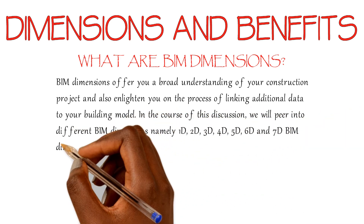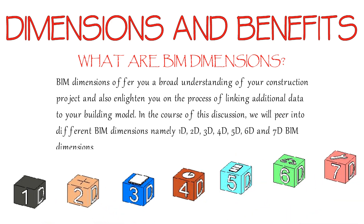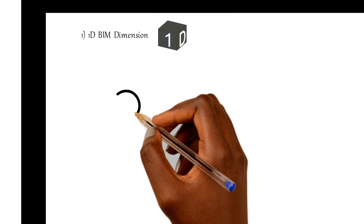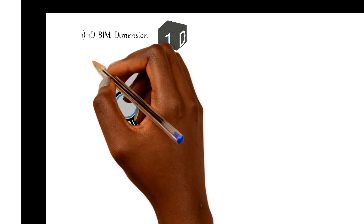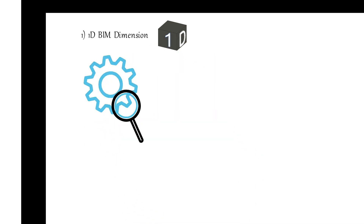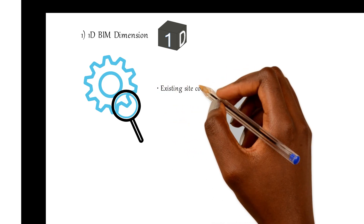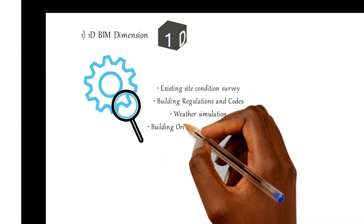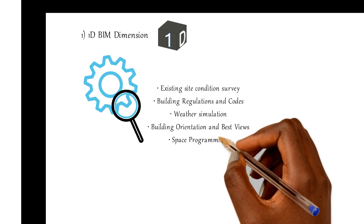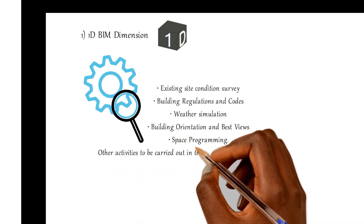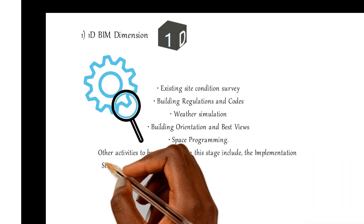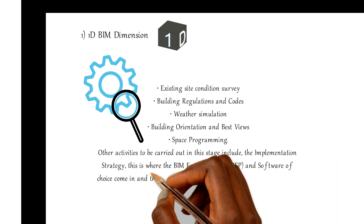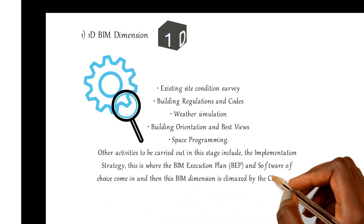Number one: 1D BIM dimension. This is basically the scratch point or the starting point of the BIM process. At this stage, research on the design is carried out — such research includes existing site condition surveys, building regulations and codes, weather simulation, building orientation and best views, and space programming. Other activities include the BIM execution plan, software of choice, and the conceptual development of the design.